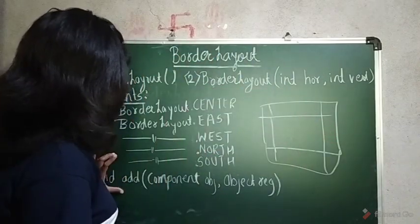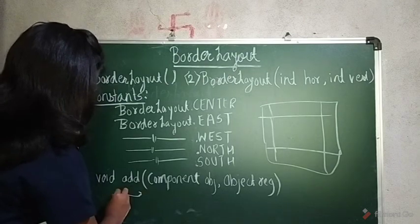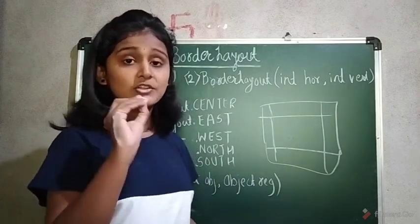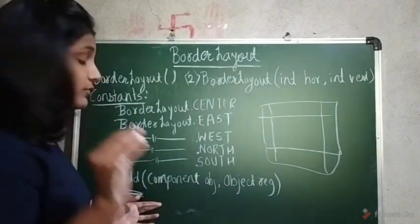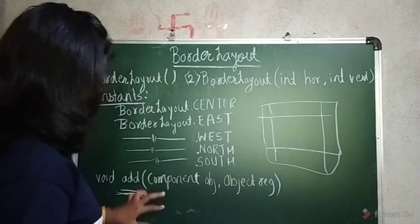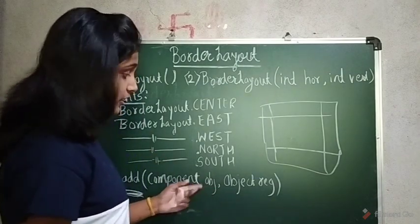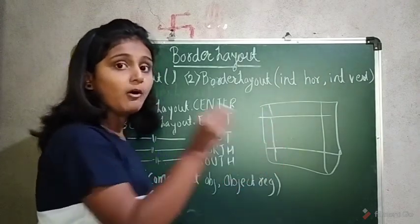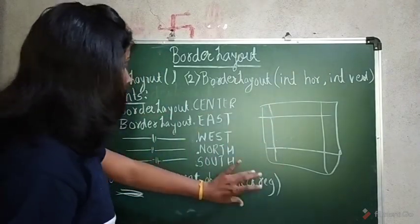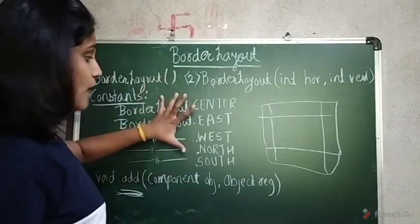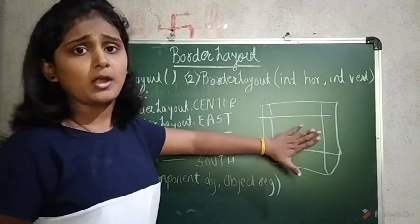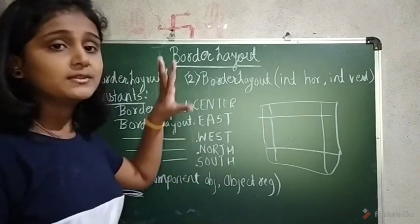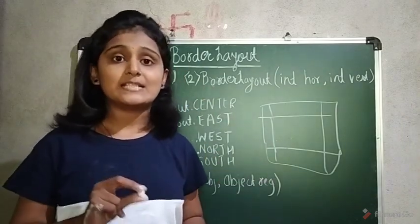To add components to the border layout, there is a method called add(). Remember, this add() method belongs to the Container class. It has two parameters: the first is the component object you want to place, and the second is the region — a constant specifying position, whether center, east, west, north, or south.